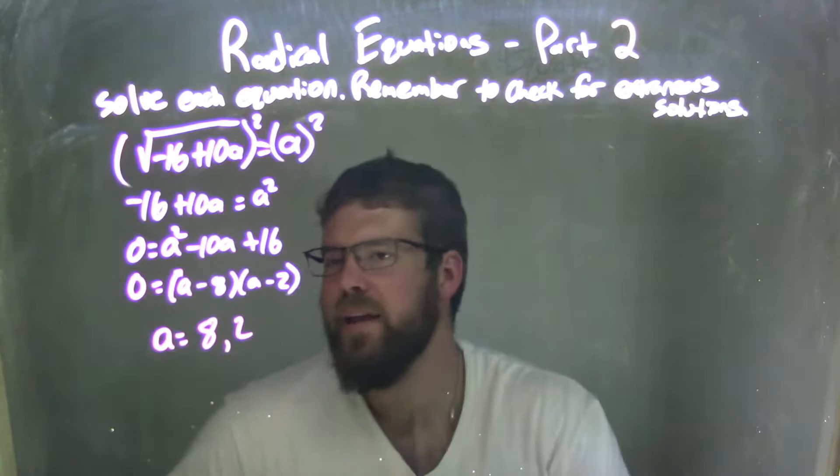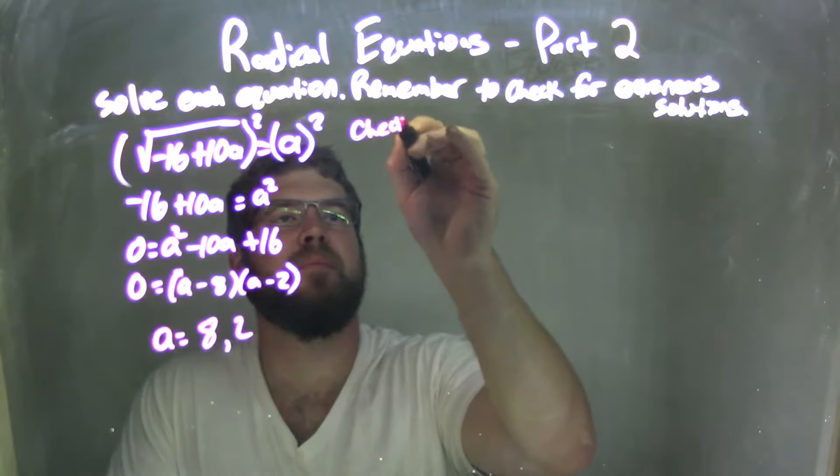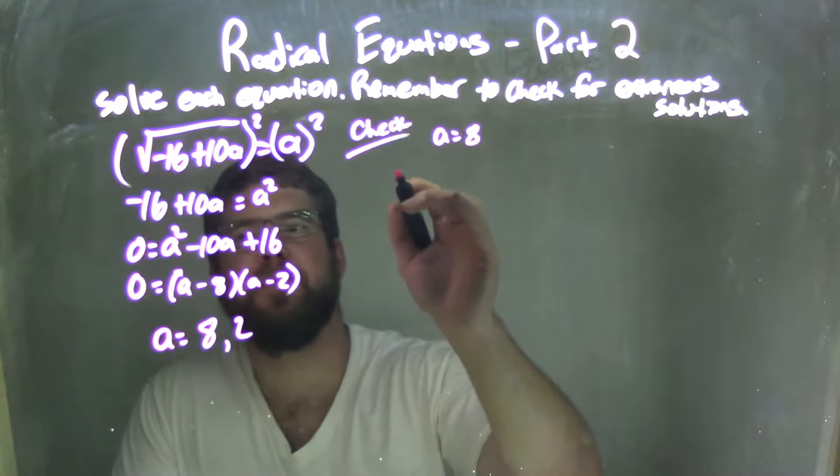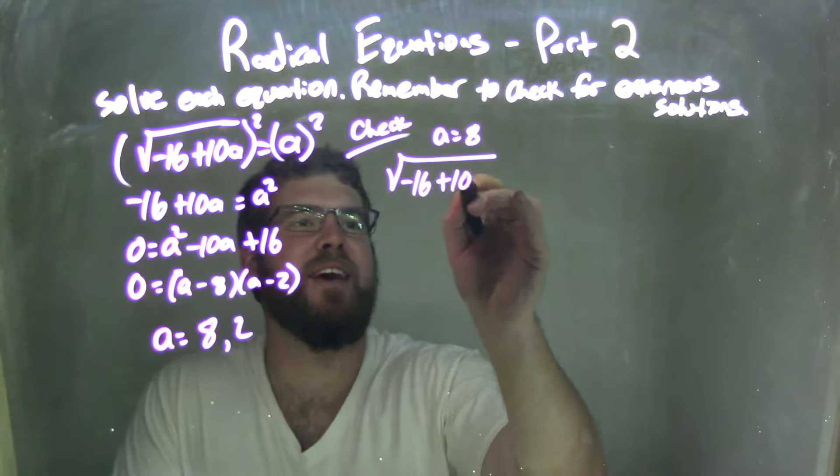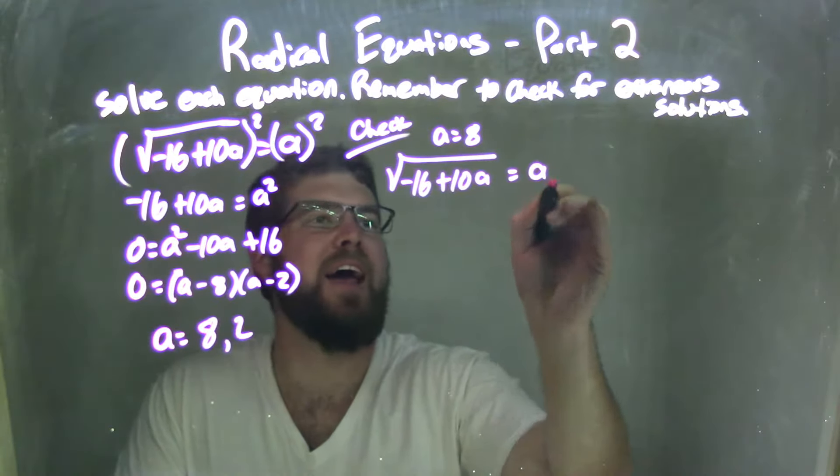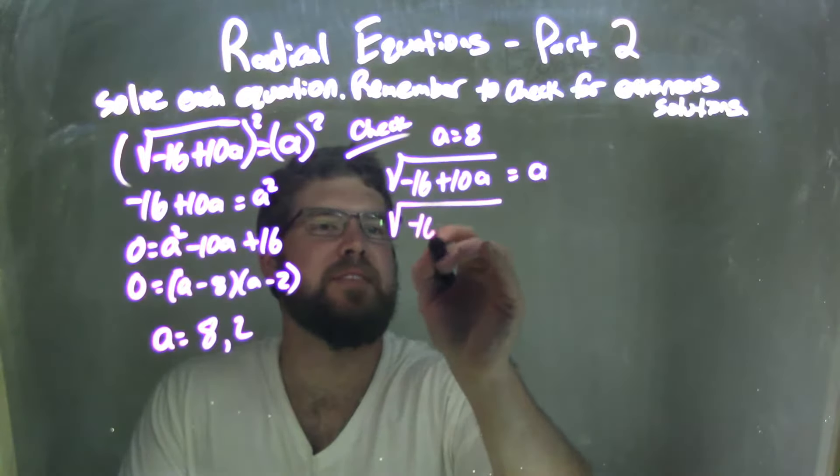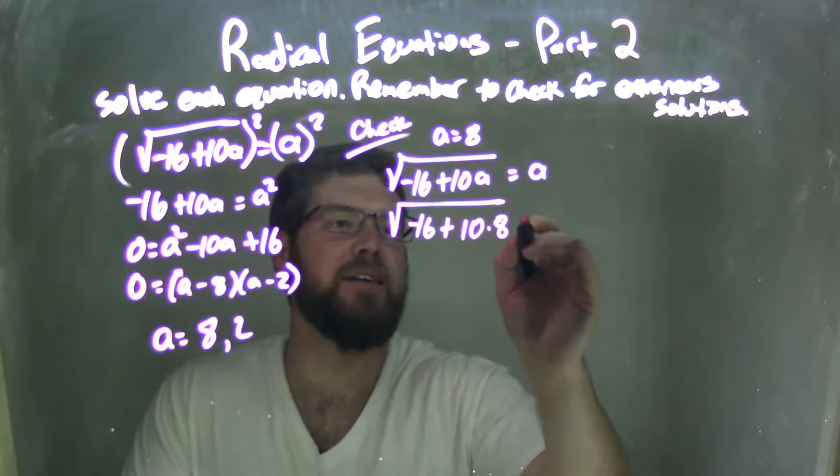All right, so a is 8 and positive 2, so now I need to check both of those. Let's check for extraneous solutions here. So let's do a equals 8 first. I have my square root, negative 16 plus 10 times a equals a. Let's plug 8 in for a here: negative 16 plus 10 times 8 equals 8.